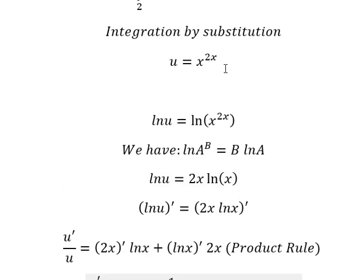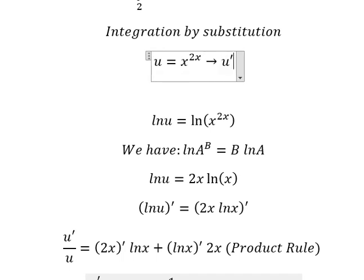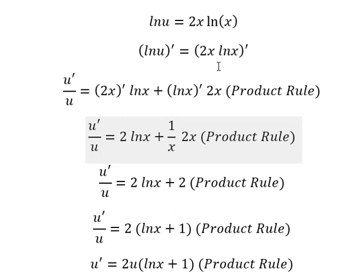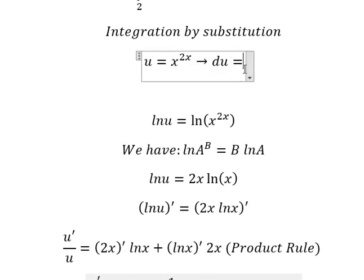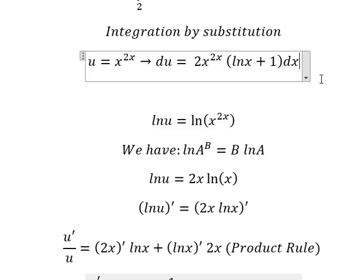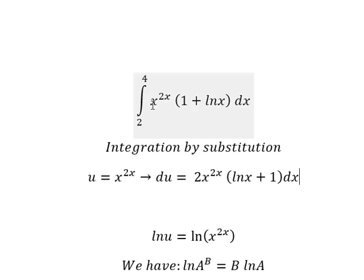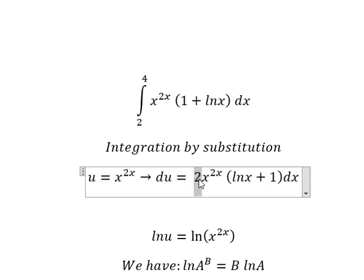So if we take the first derivative for both sides, we will have like this. Because we don't have number 2, we need to divide both sides by number 2.